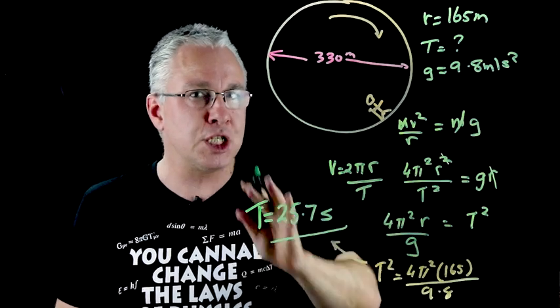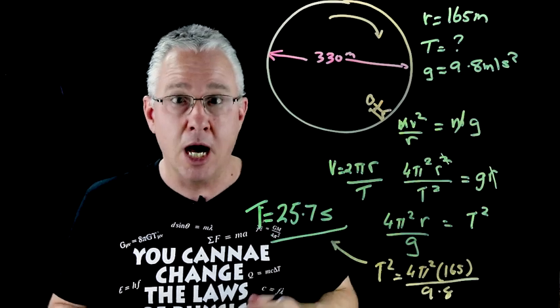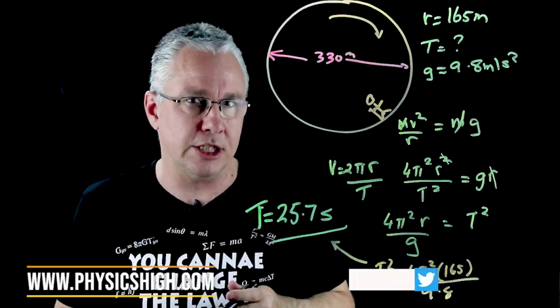So the period of this spacecraft of doing one complete revolution is 25.7 seconds. I hope that has given you a little bit of understanding of circular motion particularly in simulated gravity situations.